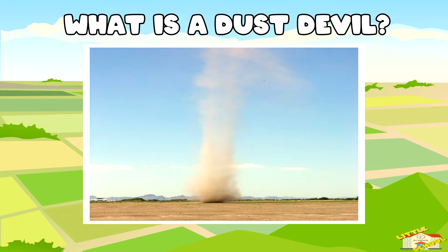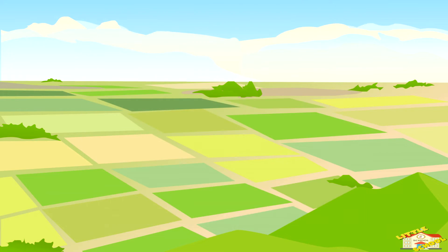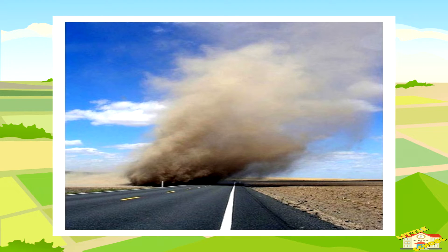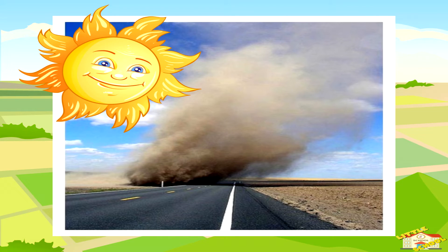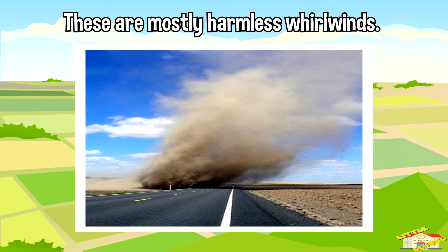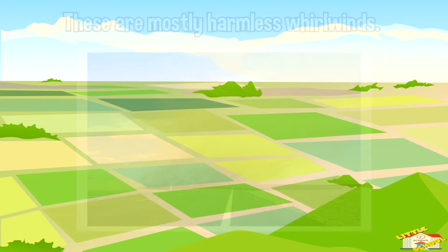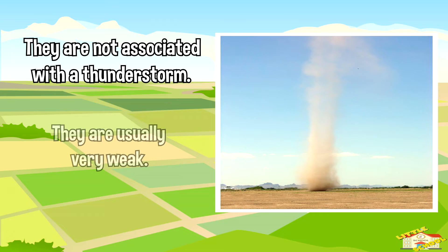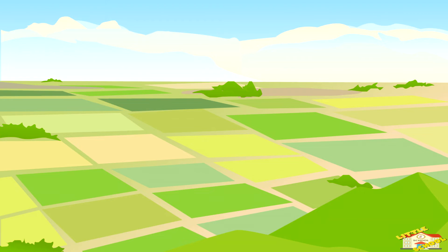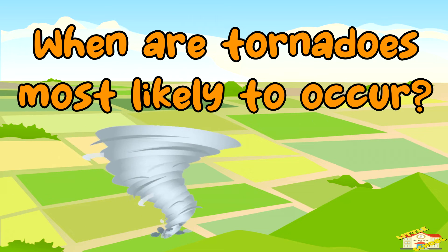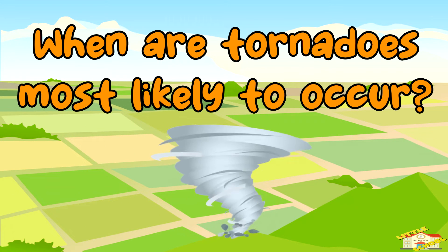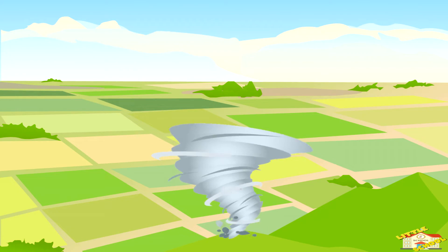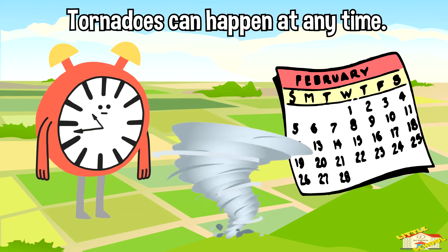What is a dust devil? A dust devil generally forms in the hot sun during the late morning or early afternoon hours. These are mostly harmless whirlwinds that differ from tornadoes in that they are not associated with a thunderstorm and are usually very weak. When are tornadoes most likely to occur? Tornadoes can happen at any time of the year and at any time of the day.